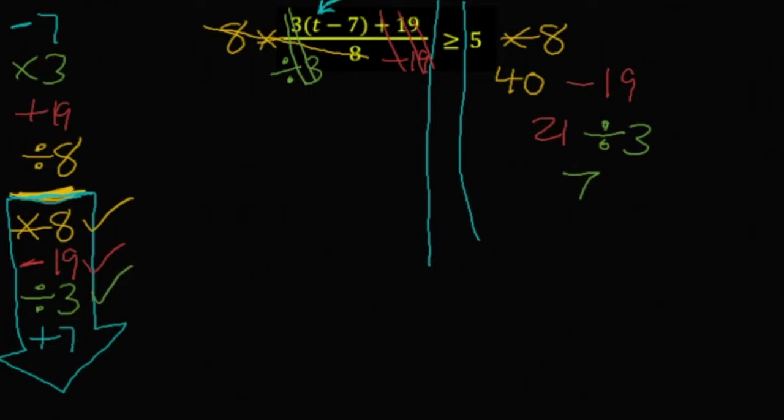Lastly, plus 7 gets rid of a minus 7. Plus 7 over here keeps the balance. And we have leftover t is greater than or equal to 14.